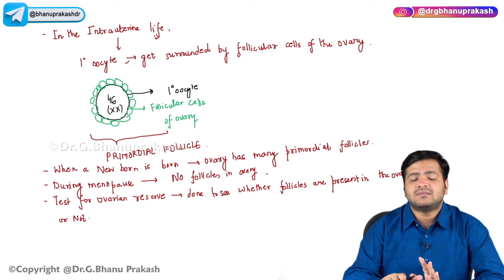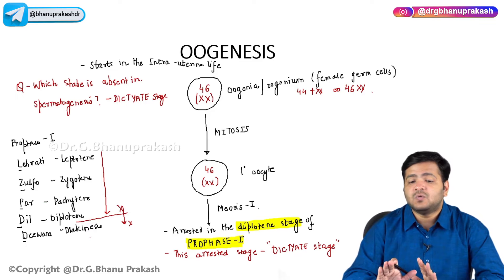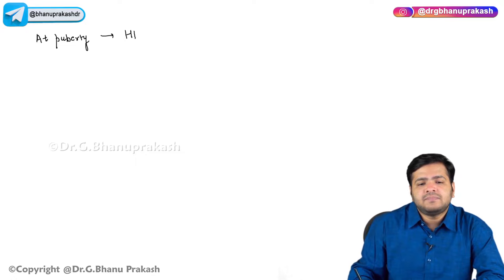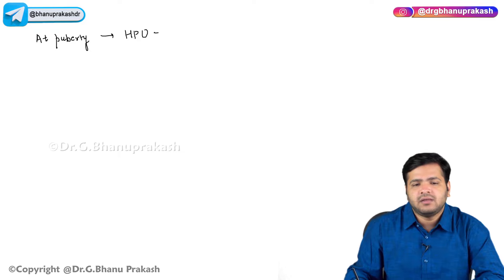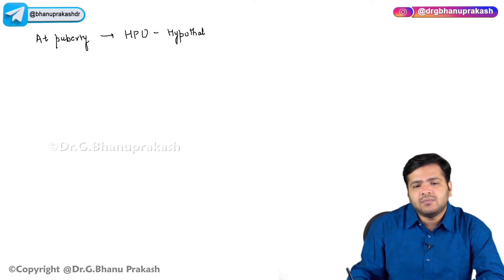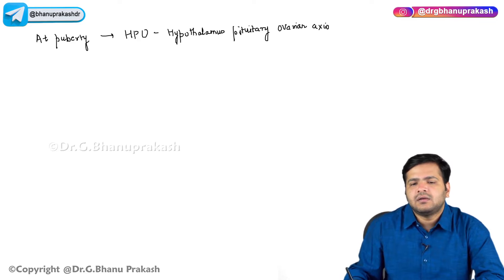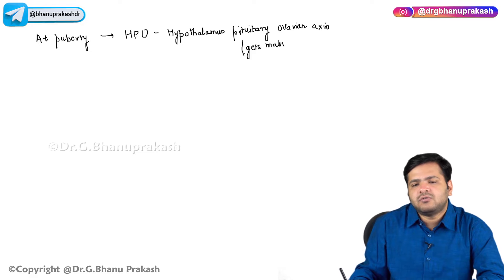This was about intrauterine life: oogonia converting into primary oocyte, primary oocyte getting arrested at the diplotene stage of prophase, surrounded by follicular cells to form the primordial follicle. Now let us see what happens at puberty — the hypothalamus-pituitary-ovarian axis gets mature.